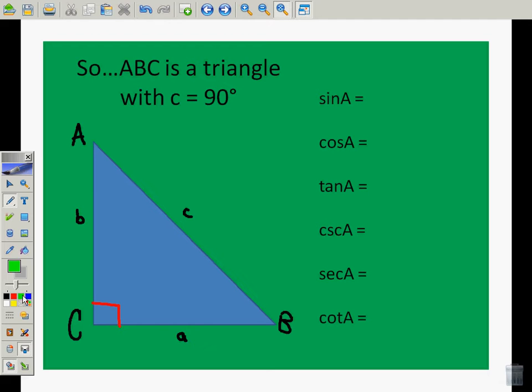Now, the acronym that we need to remember, SOH CAH TOA. And with SOH CAH TOA, it's telling us the basic trig ratios. So, sine A is opposite over hypotenuse. Opposite over hypotenuse. So, in this case, since we're looking at angle A, the opposite is A, and the hypotenuse is little C. Okay? So, you see how this works.